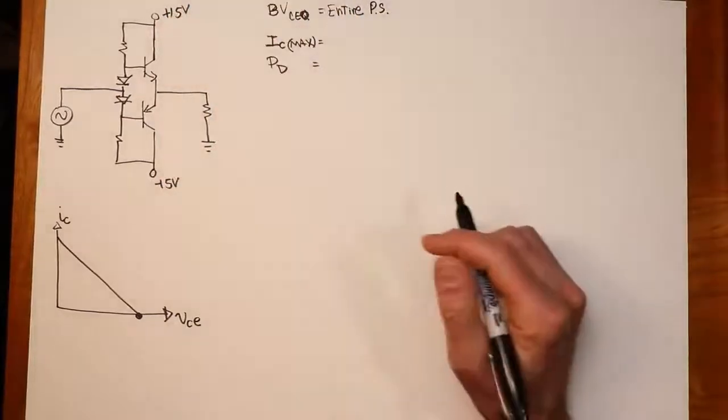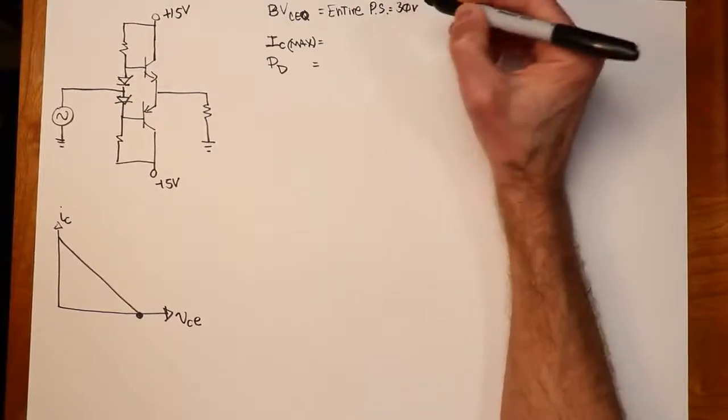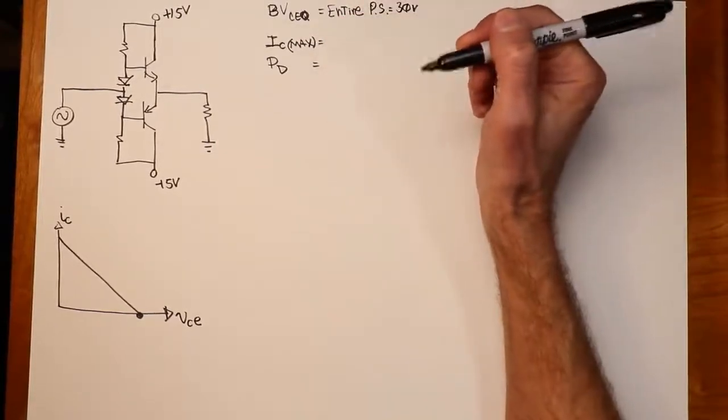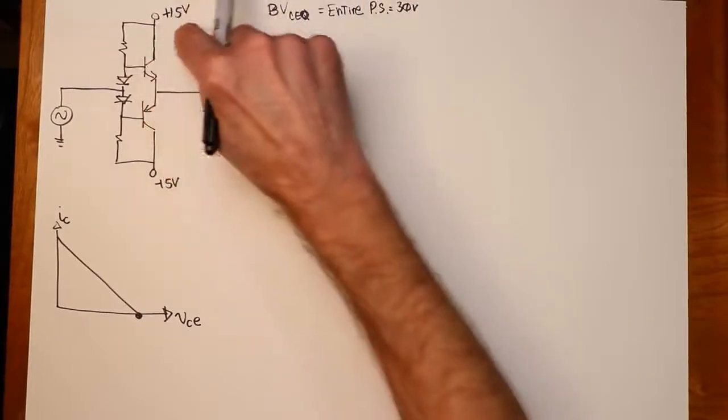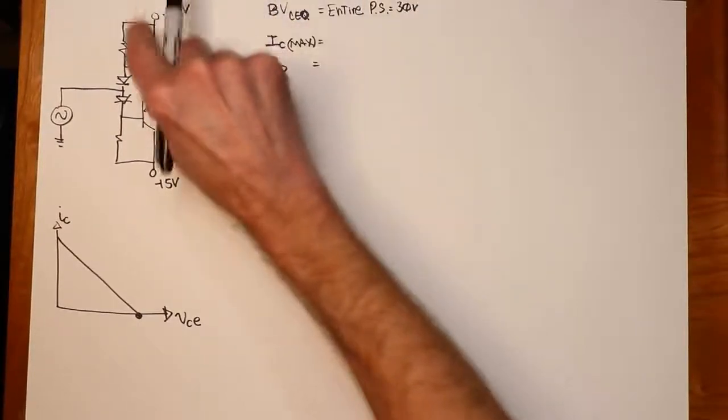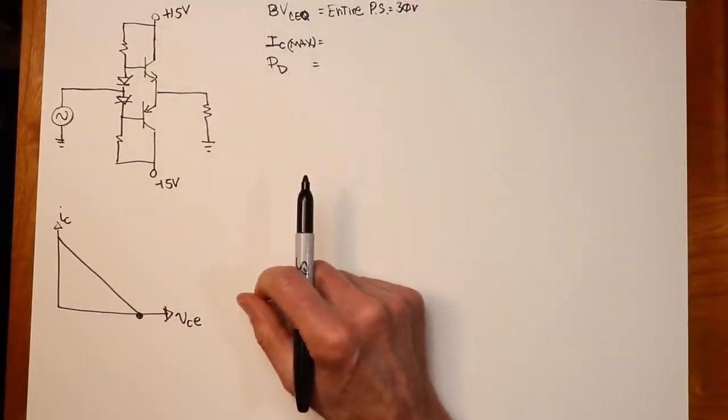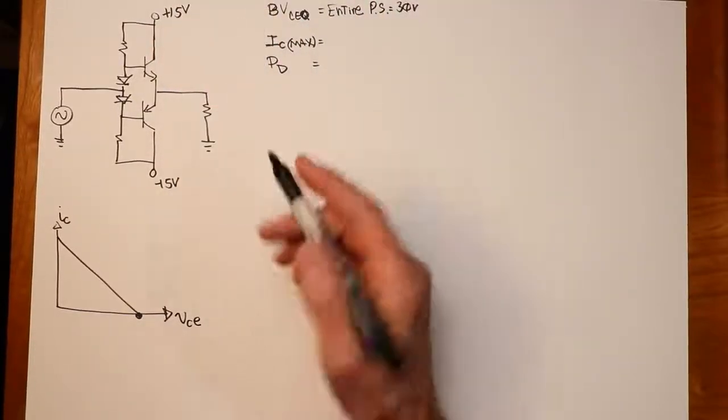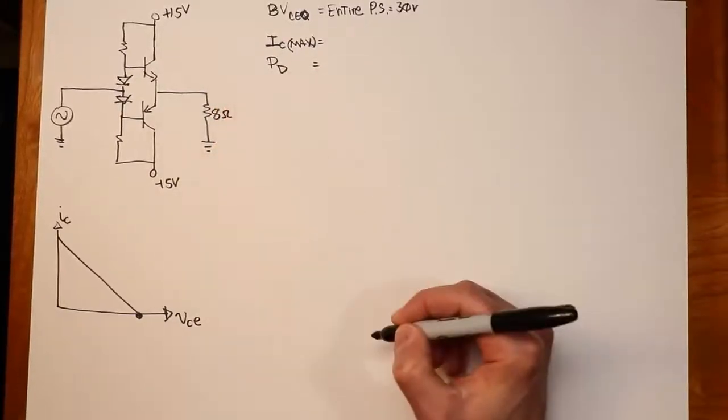So the breakdown voltage would have to equal the entire power supply. So in this case, that would be 30 volts. What's the IC max rating for the transistor? Well, that would occur when this thing is right at saturation. In other words, you take your full power supply, your compliance, your peak compliance, and you would divide it by your load, okay?